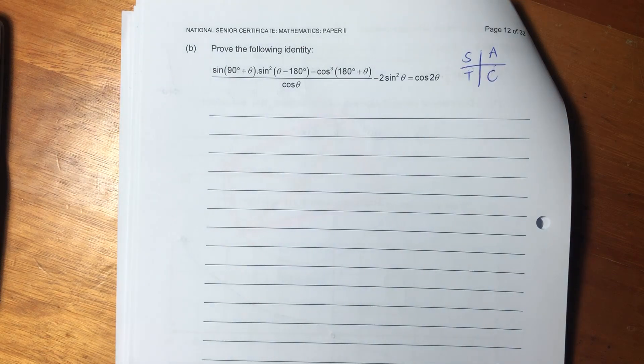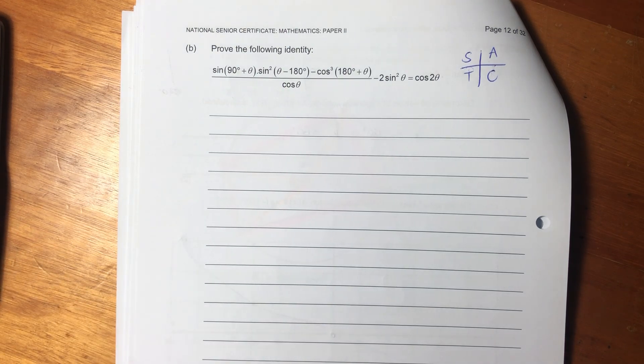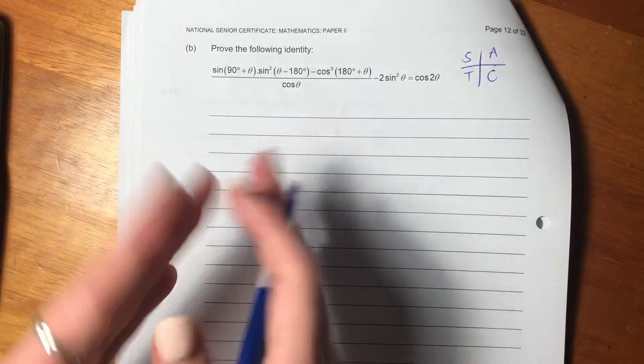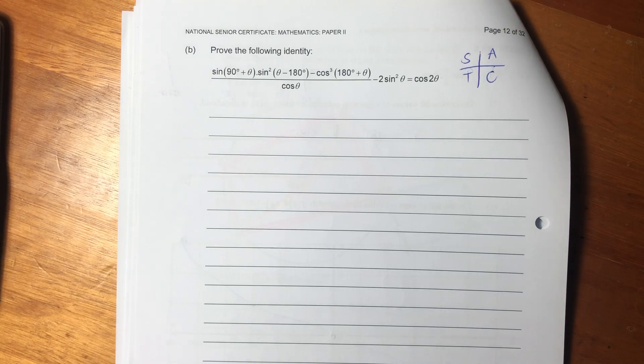Okie dokes. So it says, prove the following identity. Now, I must be honest with you, I love identities like this. I used to do identities like this in the holidays because that's the sort of nerd I am, but I love them. What we're saying is manipulate that side and try and make it equal that side. So let's see what we can do.